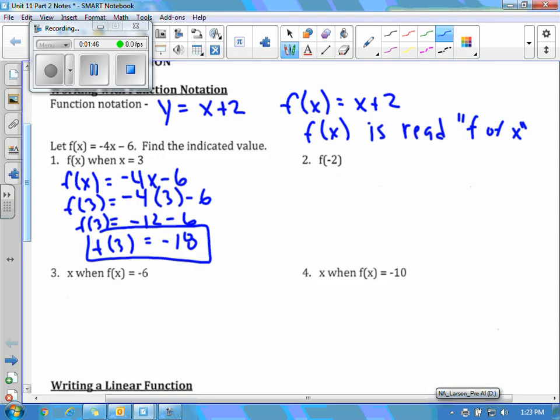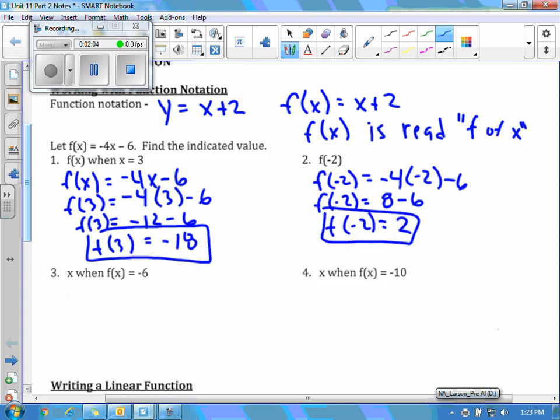Number 2 says f of negative 2, which is another way of doing what we just did. So I'll plug in negative 2, so f of negative 2 equals negative 4 times negative 2 minus 6. So f of negative 2 equals 8 minus 6. So f of negative 2 equals 2. So that's solving for a function when you're given the value of x.